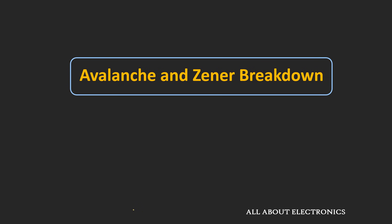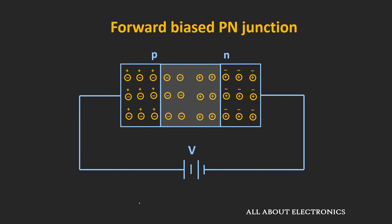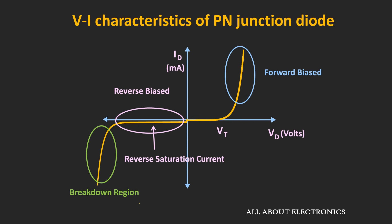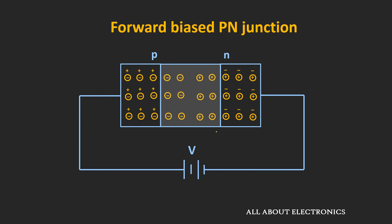Hey friends, welcome to the YouTube channel all about electronics. In the previous video, we have seen how the P-N junction diode can be operated in the forward as well as the reverse bias condition. In the forward bias condition, when the applied voltage is more than the threshold voltage or the barrier potential of this P-N junction diode, then the current starts flowing from the P-side to the N-side.